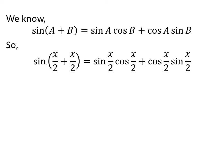So, if a is equal to half of x and b is equal to half of x, then sine of half of x plus half of x is equal to sine of half of x times cosine of half of x plus cosine of half of x times sine of half of x.